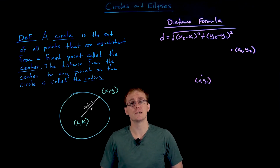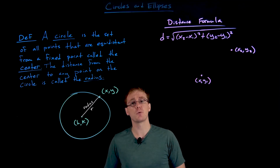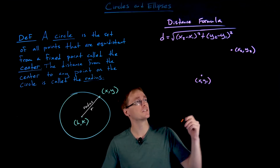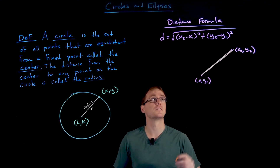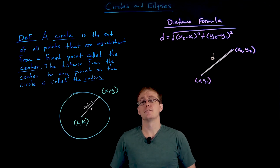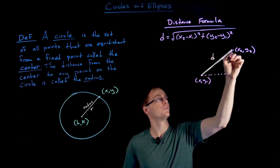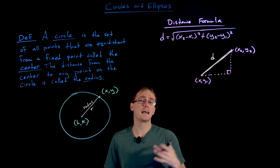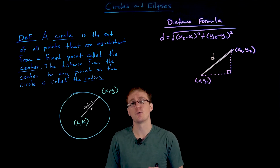In order to use the distance formula we need to know two points and their ordered pairs or coordinates. Let's call our first point (x₁, y₁) and our second point (x₂, y₂). Then the distance formula is going to calculate that straight line distance between our two points.